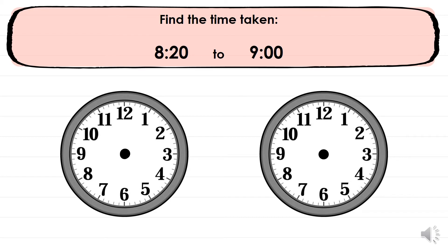Let's see our next example. Find the time taken from 8:20 to 9 o'clock. The starting time is 8:20 and the end time is 9 o'clock, and we want to figure out how much time is in between. The hour hand is pointing to the 8, and for 20 minutes, the minute hand is pointing to the 4. Now let's display 9 o'clock: the hour hand points to the 9 and the minute hand points to the 12. When the minute hand gets to 12, we get a new hour, so that's where we stop skip counting.